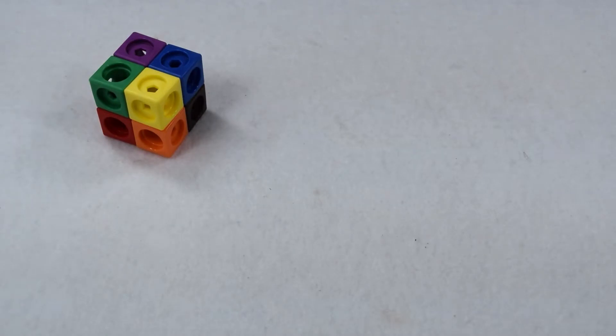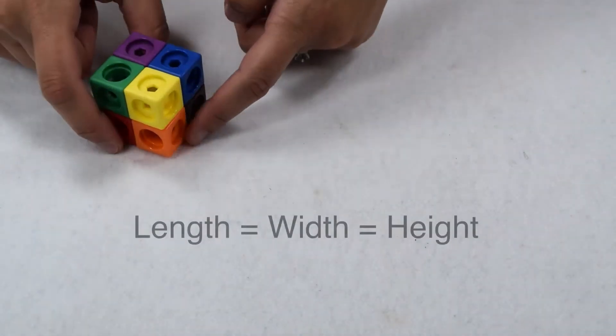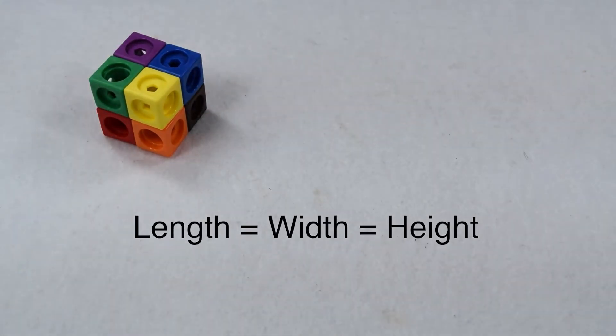We know that a cube is a specific square prism where all of the faces are squares. That means our dimensions, our length, our width, and our height are all the same.